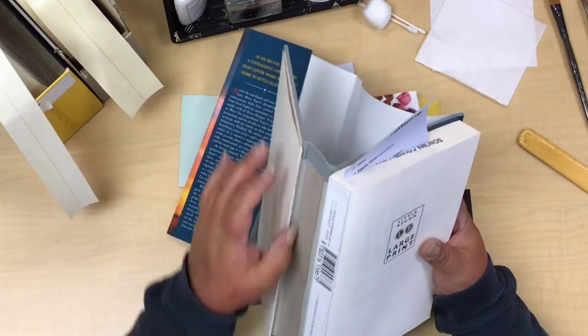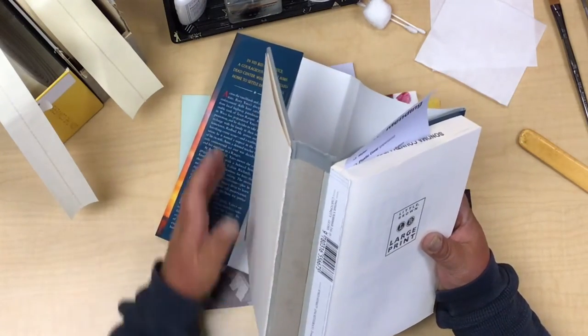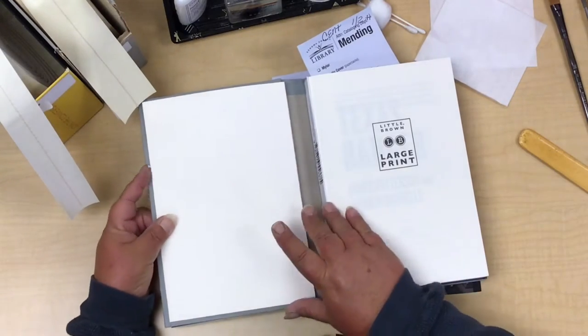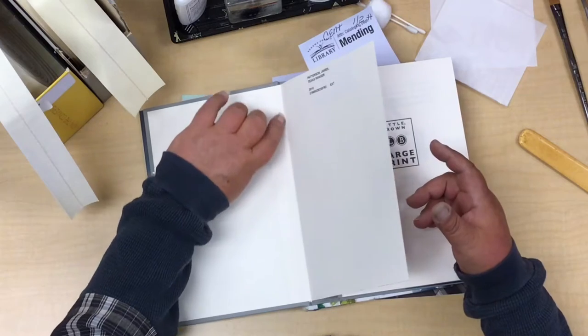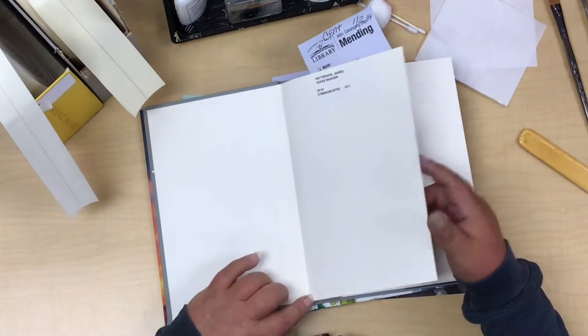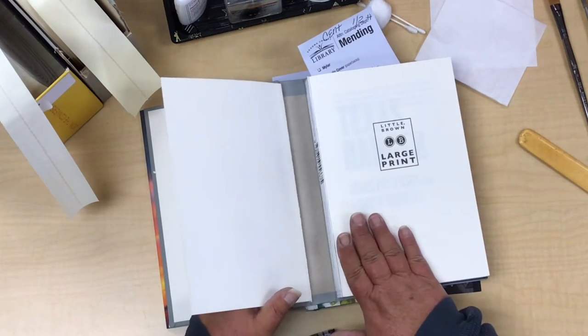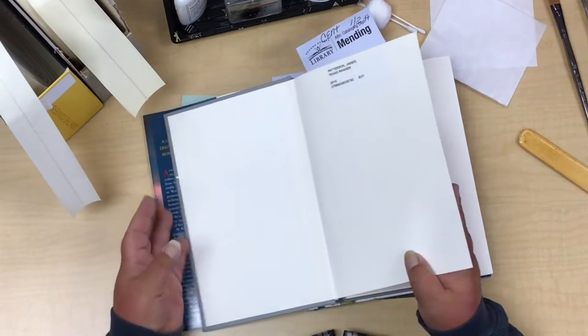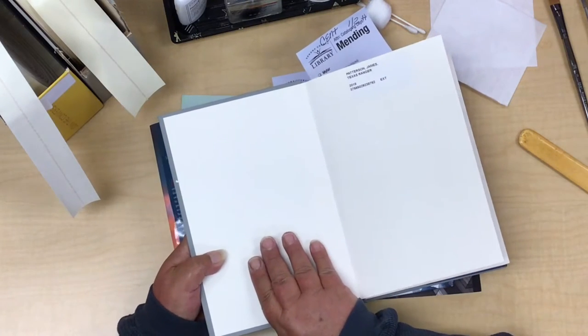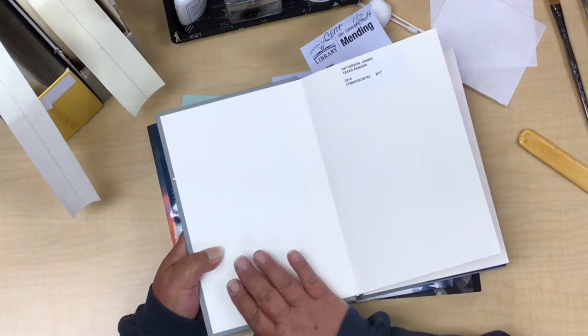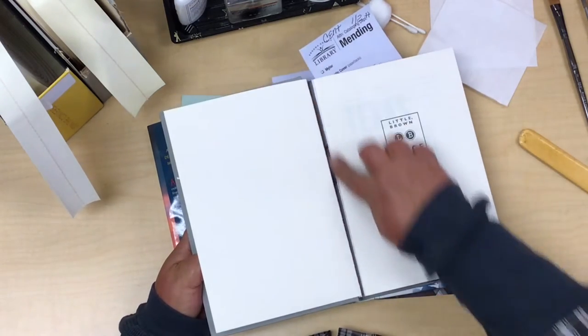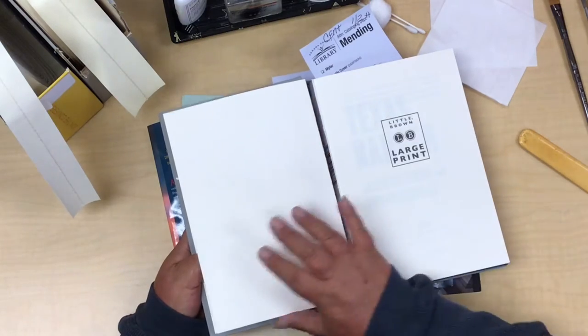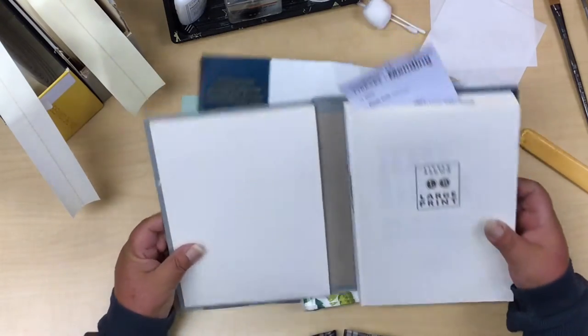This side has no ripping, no tearing, but we do need to remove the end paper. So we're going to be removing the end paper because when you do a half hinge, you have to have it glued to the cover board. Any hinge you have to glue to the cover board, and then you would glue the end paper down.